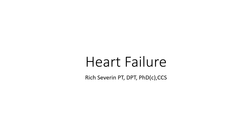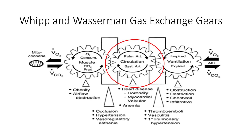Okay class, in this lecture we're going to talk about heart failure and cardiomyopathies. The Whippen-Wasserman gas exchange gears — we can't really escape this physiological model, and I think out of all the conditions we'll cover in this course, except for maybe COPD, heart failure probably best reflects this dynamic interplay. The changes that happen in patients with heart failure to the circulatory circuit have profound effects on the muscle, profound effects on ventilation and ventilatory cost, which impacts the ability for patients with heart failure to exercise, to move, and participate in society. We'll get into some of those physiological ramifications, as well as common body system impairments and how we address them from the rehabilitation aspect.